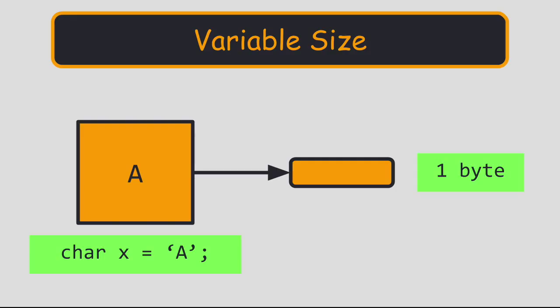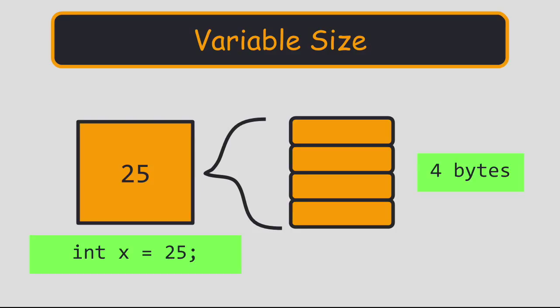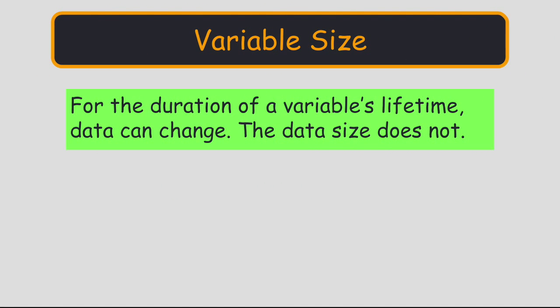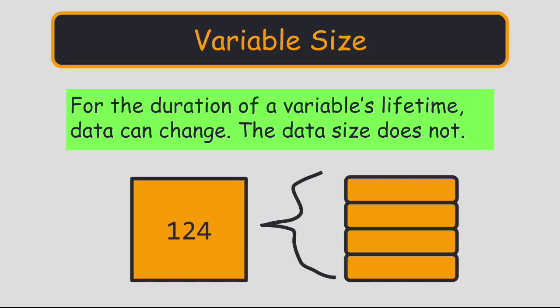A char variable, for instance, takes up one byte of memory. An int variable takes up four bytes. A double takes up eight bytes. While the contents of a variable can change during program runtime, the variable does not change. It keeps the same data type and the same allotment of memory for its lifetime.